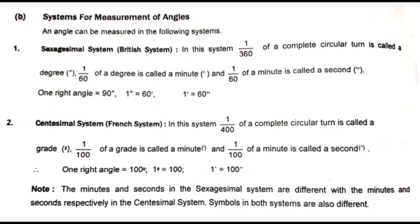There are three different systems for the measurement of angles. The first is the British system, also known as the sexagesimal system. In this system, one-360th of a complete circular turn is called a degree. One-sixtieth of a degree is called a minute, and one-sixtieth of a minute is called a second. That is: one right angle equals 90 degrees, 1 degree equals 60 minutes, and 1 minute equals 60 seconds.